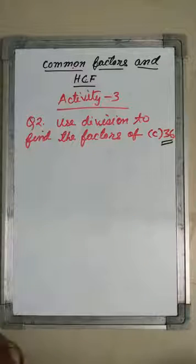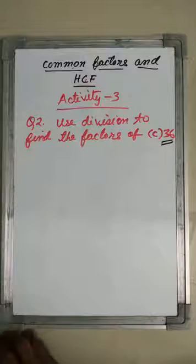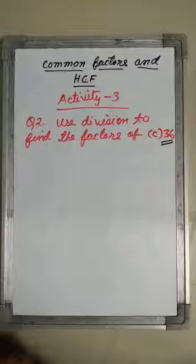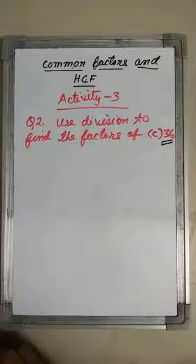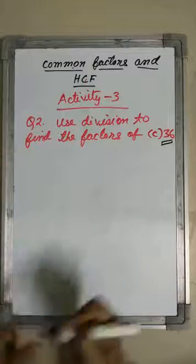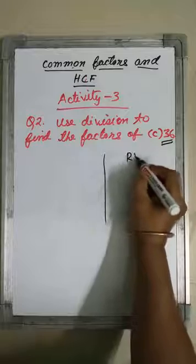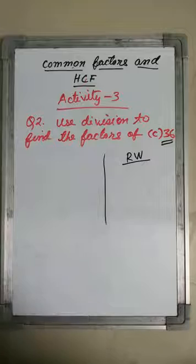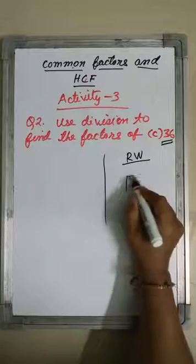I will explain one more example for better understanding. We will solve some problems from activity 3. In our last class, we solved some problems from activity 3, question number 1. Now from question number 2, I will show you some examples — use division to find the factors of question number C. For 36, we will find factors using division. You will need to do some rough work on the right side of the page in your copy.